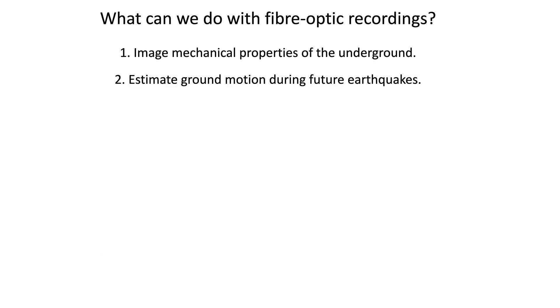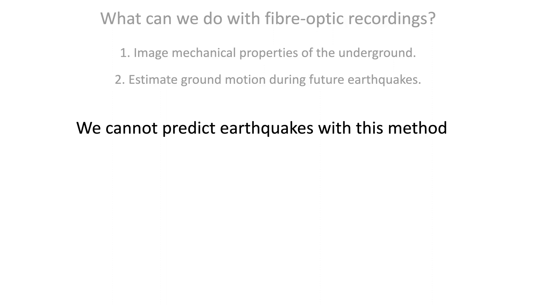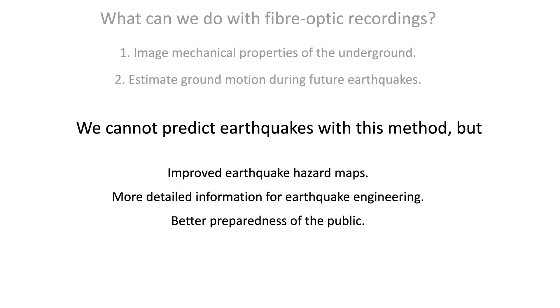Estimating ground motion based on the mechanical properties of the underground is crucial for assessing the potential impact of future earthquakes. By understanding the subsurface material properties, we can better estimate the intensity of the seismic waves. However, it is important to emphasize that we cannot predict earthquakes with this method. But we aim to improve earthquake hazard maps and provide engineers with more detailed information for earthquake engineering. Ultimately, our goal is to enhance public preparedness and contribute to a safer environment in earthquake-prone areas. So far, this pilot experiment has been very successful and the initial results look really promising. This motivates us to conduct more extensive fiber optic experiments in the Istanbul area in the coming years. Thank you for watching.